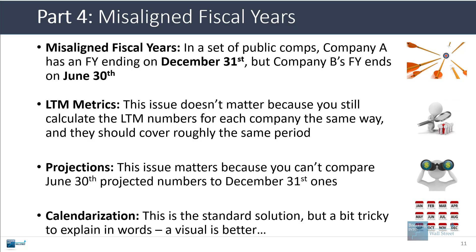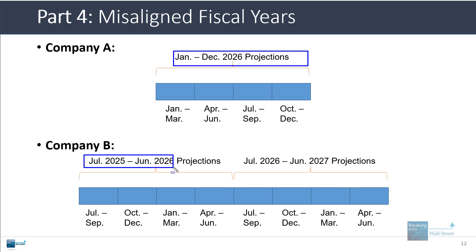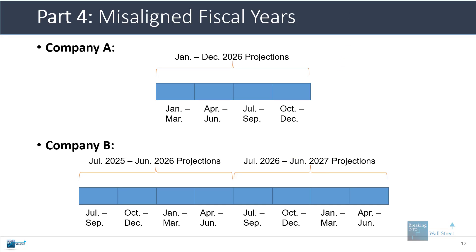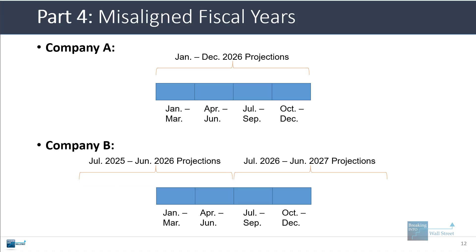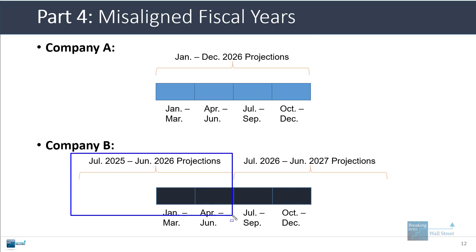The standard solution is calendarization. Company A with a December fiscal year has projections from January through December 2026. Company B with a June 30th fiscal year end has projections from July 2025 through June 2026, and then July 2026 through June 2027. To align this, you cut off the first two quarters of the first year and the last two quarters of the next year - that middle part gives you calendar year 2026 projections that align with company A's. In practice, if you can't get quarterly projections, you might take each year and multiply by 50% and add them together as a rough estimate.